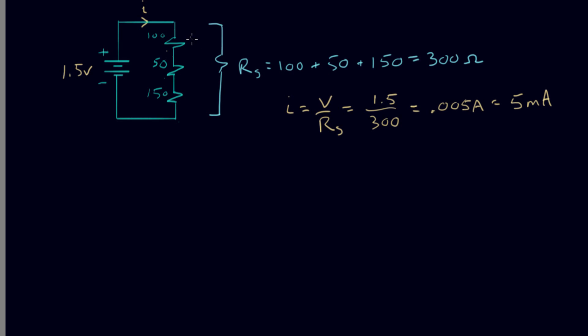So V1, which is the voltage across that resistor, V1 equals I times R1, as we said before. So it's 5 milliamps times 100 Ohms, which equals 0.5 volts.